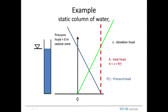What we see from this is that the pressure head is decreasing and reaching zero at the water table. In order for it to be in equilibrium, the pressure head has to be less than zero in the VEDO zone. That's one thing we can see from this simple exercise.